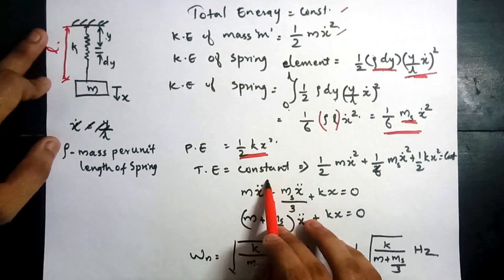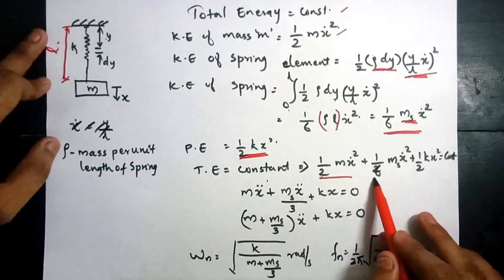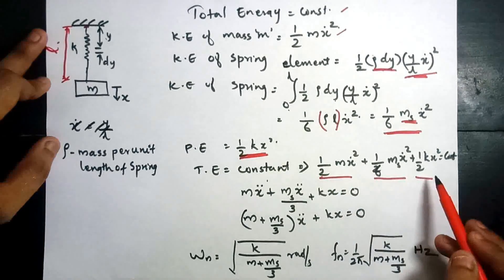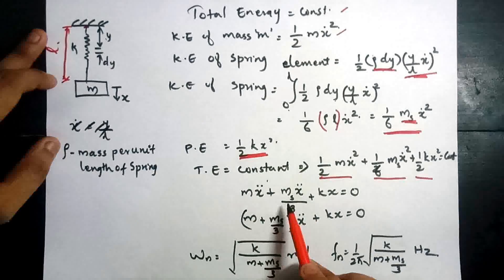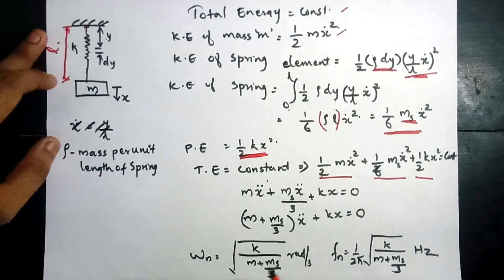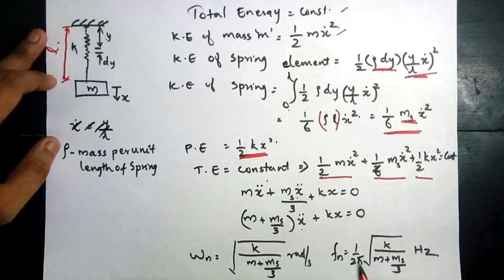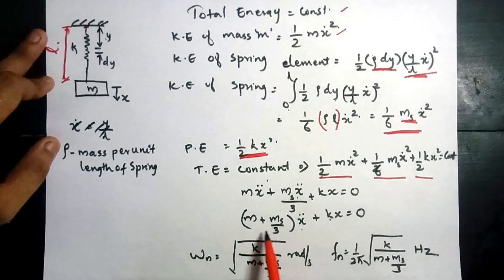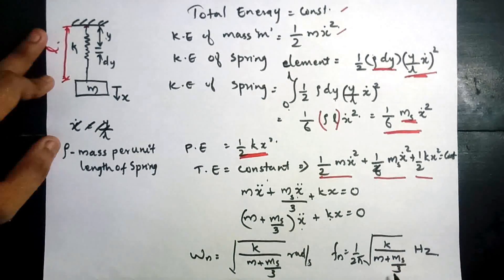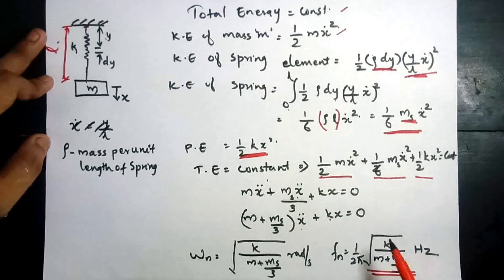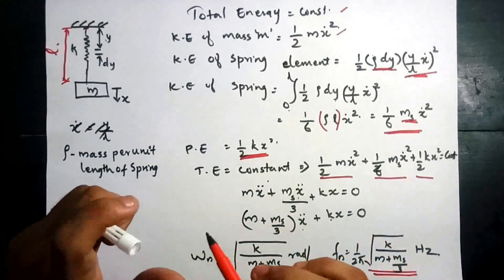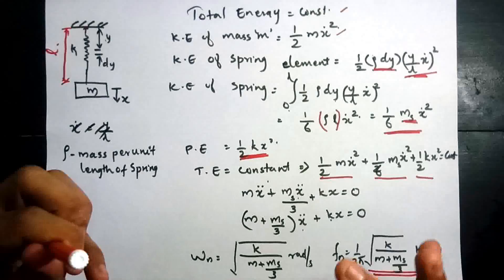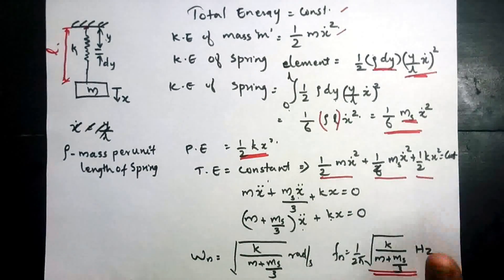The total energy — kinetic energy of the mass plus kinetic energy of the spring plus potential energy — is equal to a constant. Using the energy method, taking the time derivative and setting it to zero, we get the equation of motion: (m + ms/3) x-double-dot plus k x equals zero. From this, the natural frequency omega_n equals sqrt(k / (m + ms/3)). This shows the effect of mass of the spring on the natural frequency.